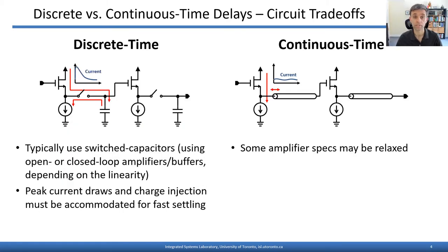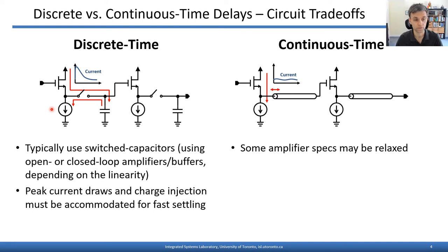There are also trade-offs in typical circuit implementations. Discrete-time delay circuits typically use switched capacitors driven by either open- or closed-loop amplifiers or buffers depending on linearity requirements. After the switch opens or closes, a spike of current flows onto or off the switched capacitor, riding on top of some bias current maintained in the buffer amplifier — an inherent source of nonlinearity in most discrete-time samplers. With continuous-time delay elements, amplifier specs can be relaxed because current flows continuously and the peak-to-average ratio of current in the driving amplifiers is reduced.